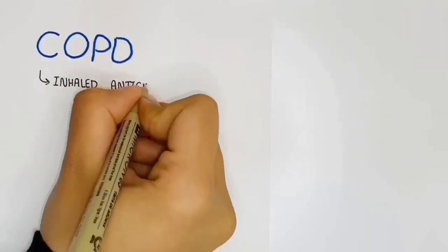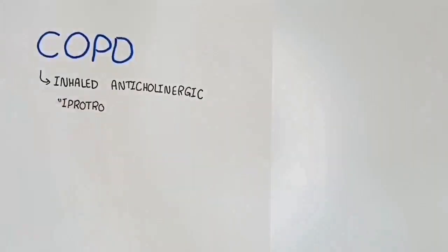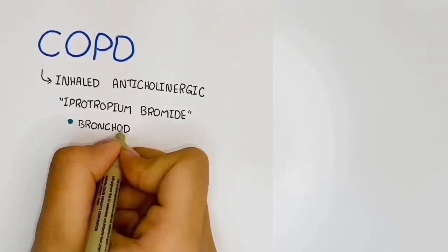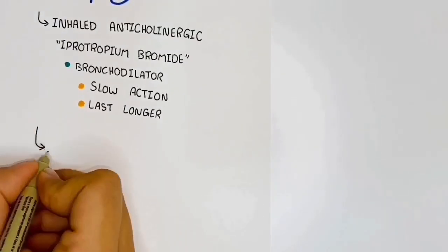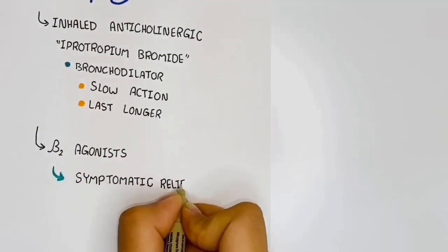For COPD, we use inhaled anticholinergic such as ipratropium bromide, which is a bronchodilator with slow action that lasts longer. Also, we can use beta-2 agonists for symptomatic relief.